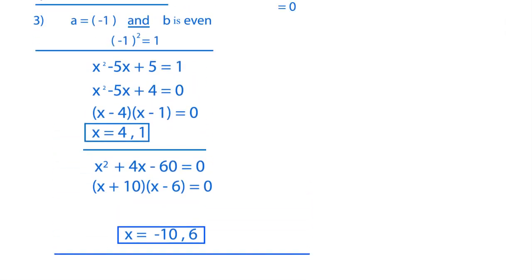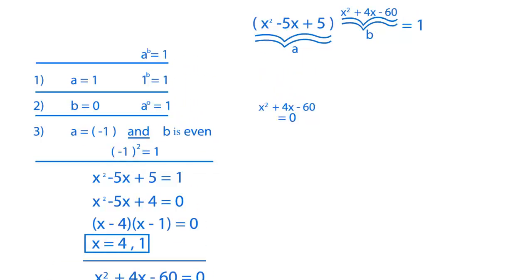Now we've got our final possibility, which is A is negative 1 and B is even. What's A? x squared minus 5x plus 5. So x squared minus 5x plus 5 is equal to negative 1.